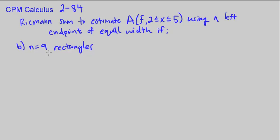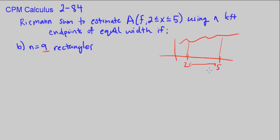For part B, we have 9 rectangles. Again, we go from 2 to 5, and now we split it into 9 rectangles. The distance is 3 units, and to split into 9 rectangles, the base of each rectangle is 3 divided by 9, which simplifies to 1/3.